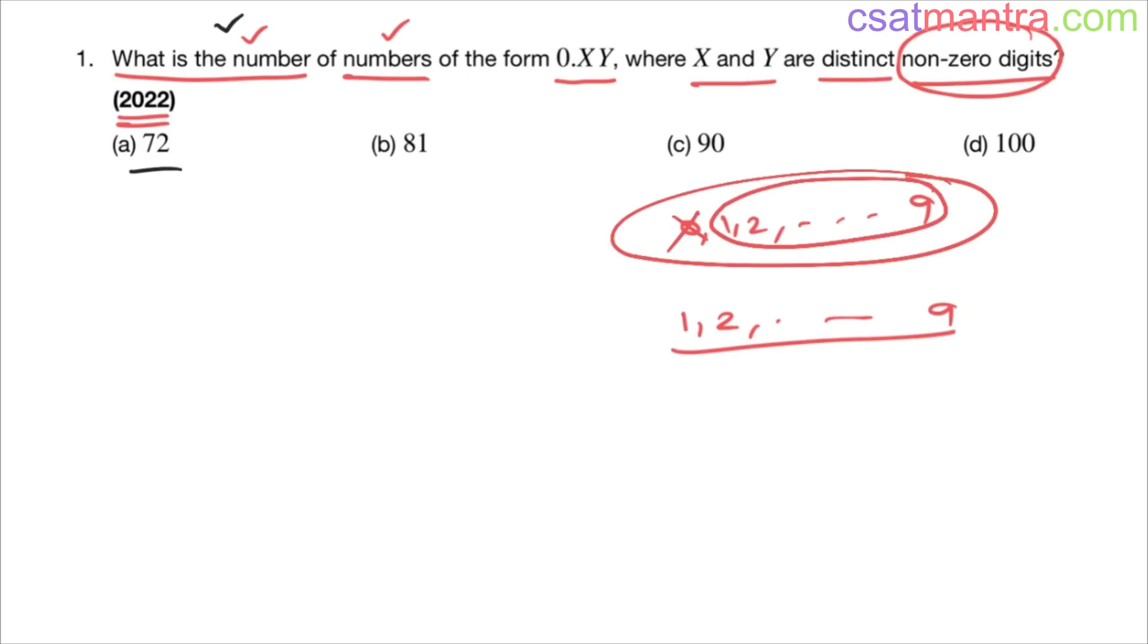Permutation and combination is used for counting, right? This is what we learned in our course, so it makes the problem very easier. So complex counting where it involves so much time, we don't do manually.